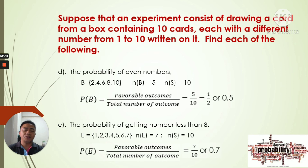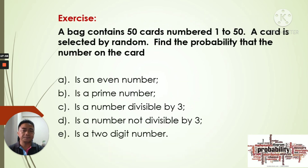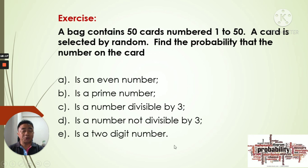I hope that you understand the first part of the main topic on probability. So we have here our activity for today: a bag contains 50 cards numbered 1 to 50, and a card is selected at random. Find the probability that the number on the card is an even number, a prime number, a number divisible by 3, a number not divisible by 3, and a two-digit number. That's all for today — see you again next time. Bye bye!